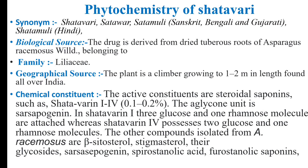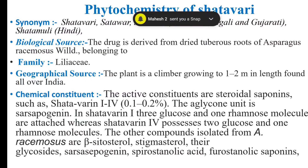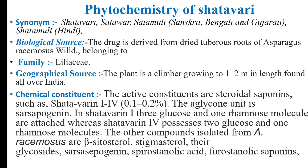Biological source: the drug is derived from the dried tuberous root of Asparagus racemosus, wild, belonging to family Liliaceae. Geographical source: the plant is a climber growing to 1 to 2 meters in length, found all over India.